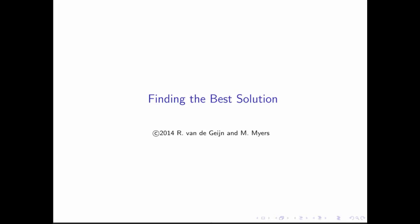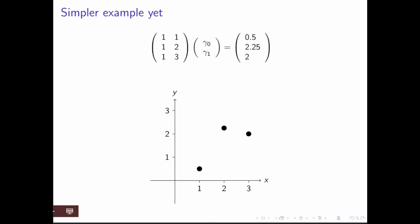Let's have a look at what we mean by the best solution and how to find it. To do so, we're going to simplify the problem slightly more. We're instead going to look at putting a line through three points, while before we were looking at a line through four points.